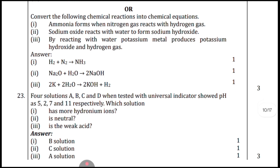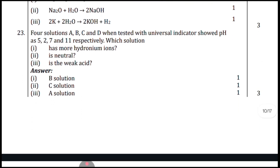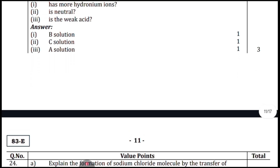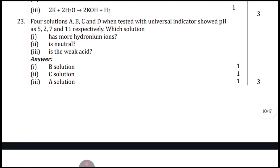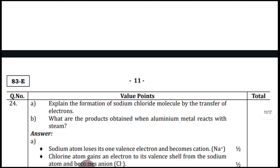Question twenty-three: four solutions A, B, C, and D were tested with universal indicator showing pH values of 4, 2, 7, and 11 respectively. Which solution has more hydronium ions? Which is neutral? Which is a weak acid? Answers: first — solution B; second — solution C; third — solution A. Marks: one mark each, three marks total.